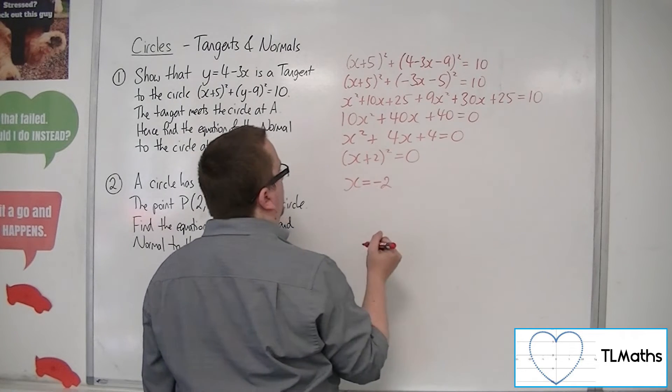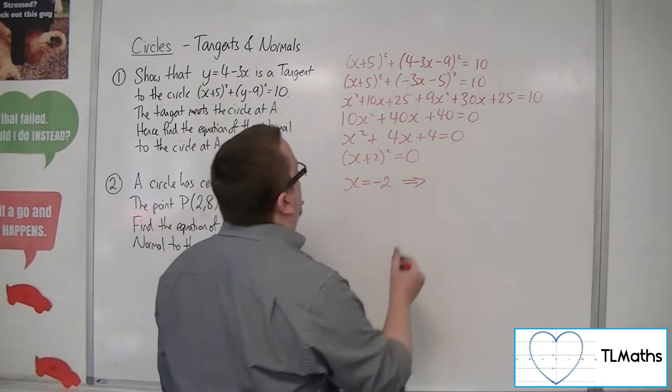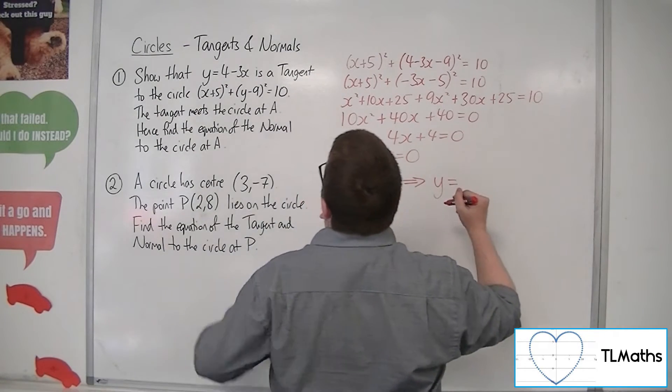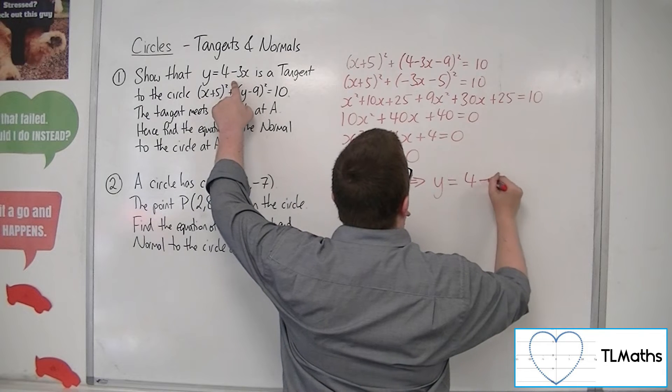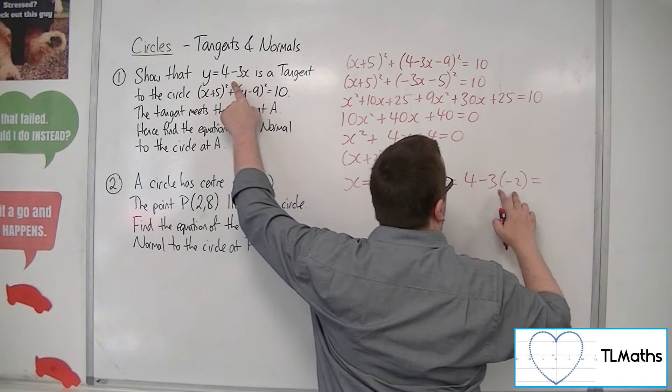And so this is a quadratic that factorizes to x plus 2 squared. And so x must be minus 2, and then you can work out what y has to be. So y is equal to 4, take away 3 lots of minus 2. So that's minus 3 times minus 2 is 6.